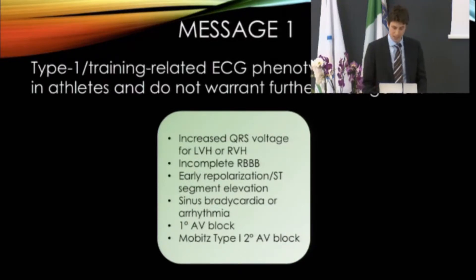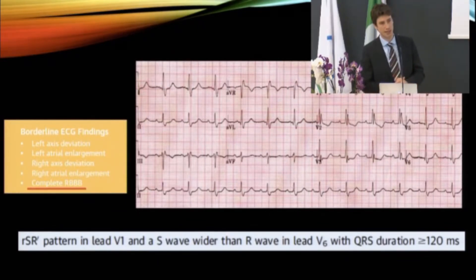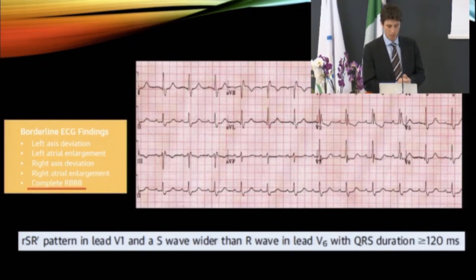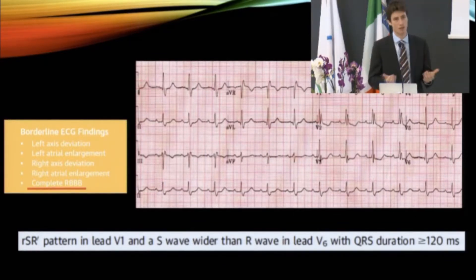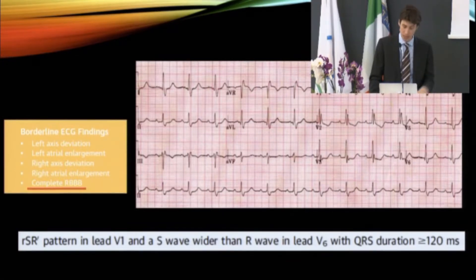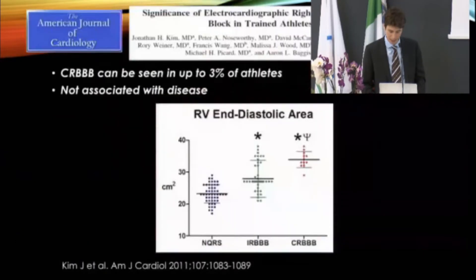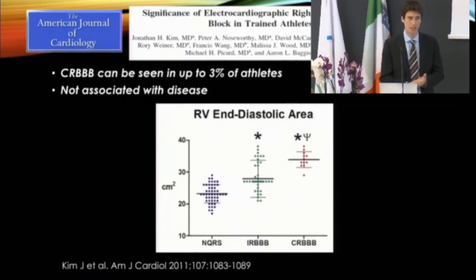The first key message is that type 1 training-related ECG phenotypes are common in athletes and do not warrant further investigations. Moving to borderline ECG findings — the orange box — these changes in isolation do not require anything further, but if more than one is combined, further evaluation such as an echocardiogram is needed. Complete right bundle branch block is defined by an RSR-prime pattern in V1 with a QRS duration of more than 120 milliseconds. If in isolation, it is considered to be normal in athletes.